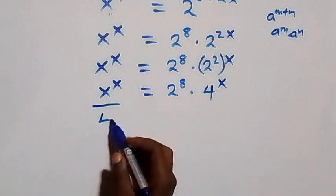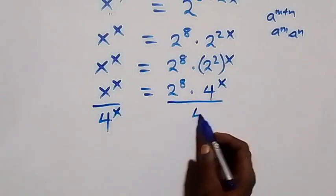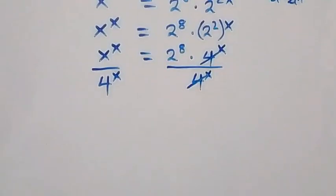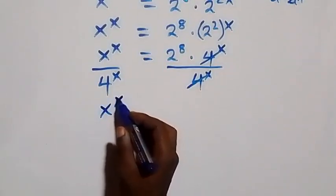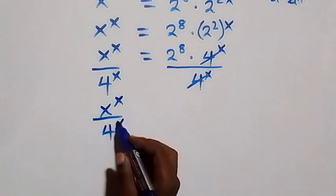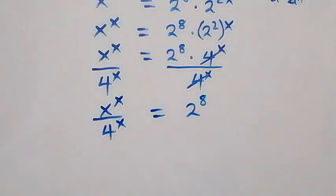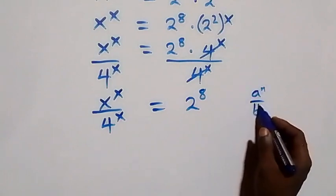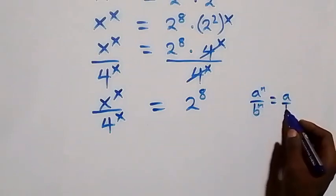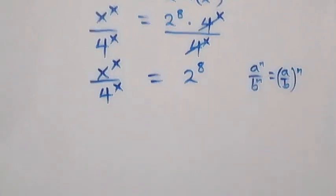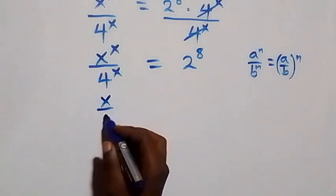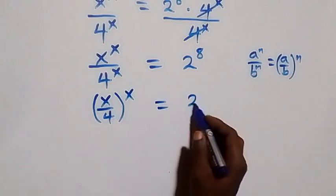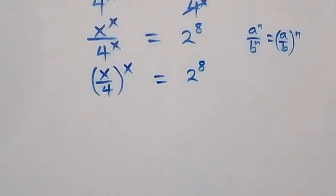Next, we divide both sides by 4 raised to power x. On the left side, 4 raised to power x divided by 4 raised to power x gives 1 raised to power x. This follows from the law that a raised to power n over b raised to power n equals a over b, all raised to power n. So we get x over 4, all raised to power x.